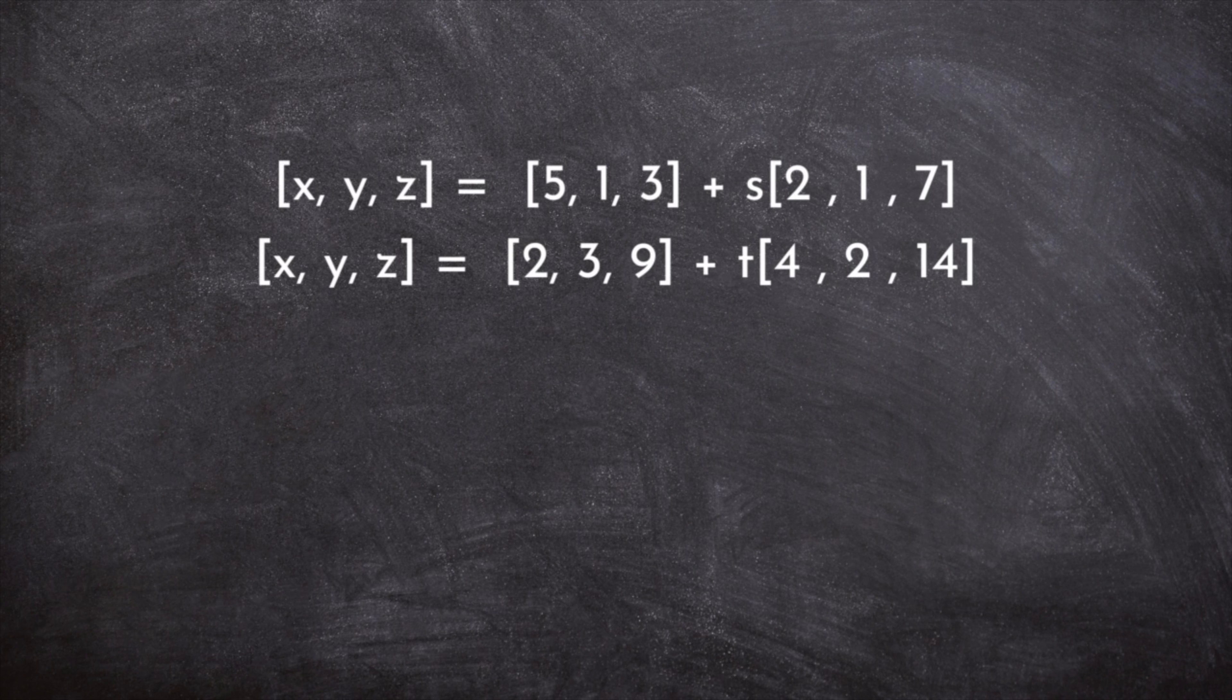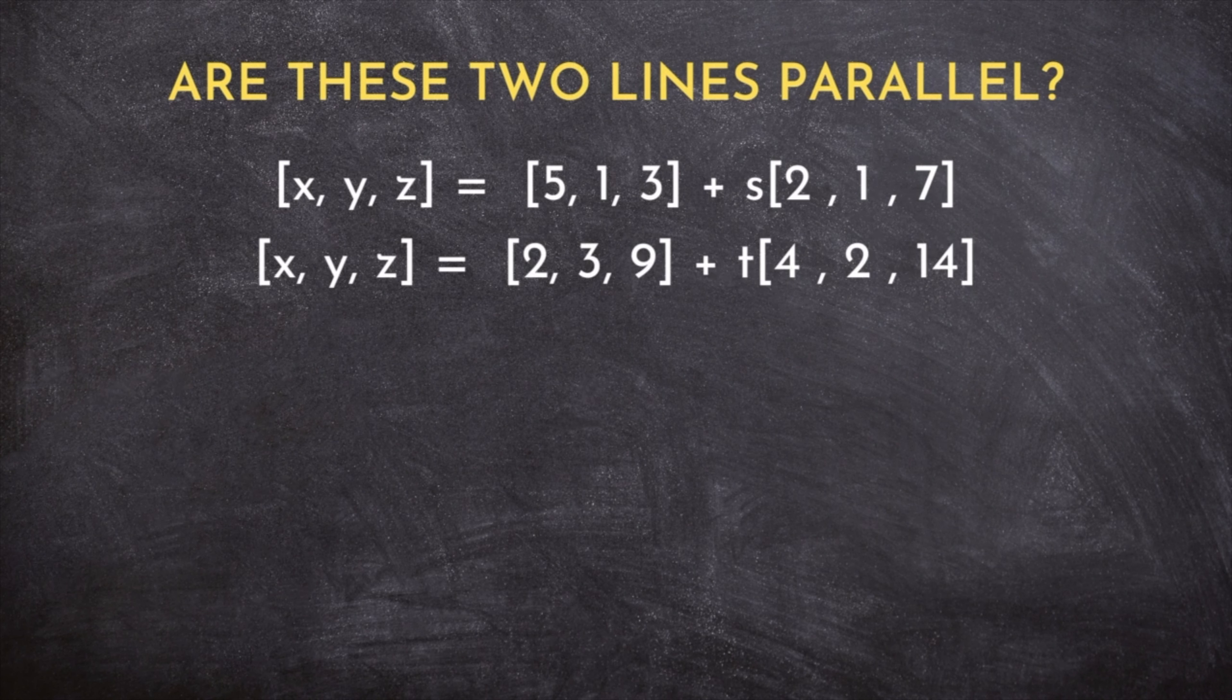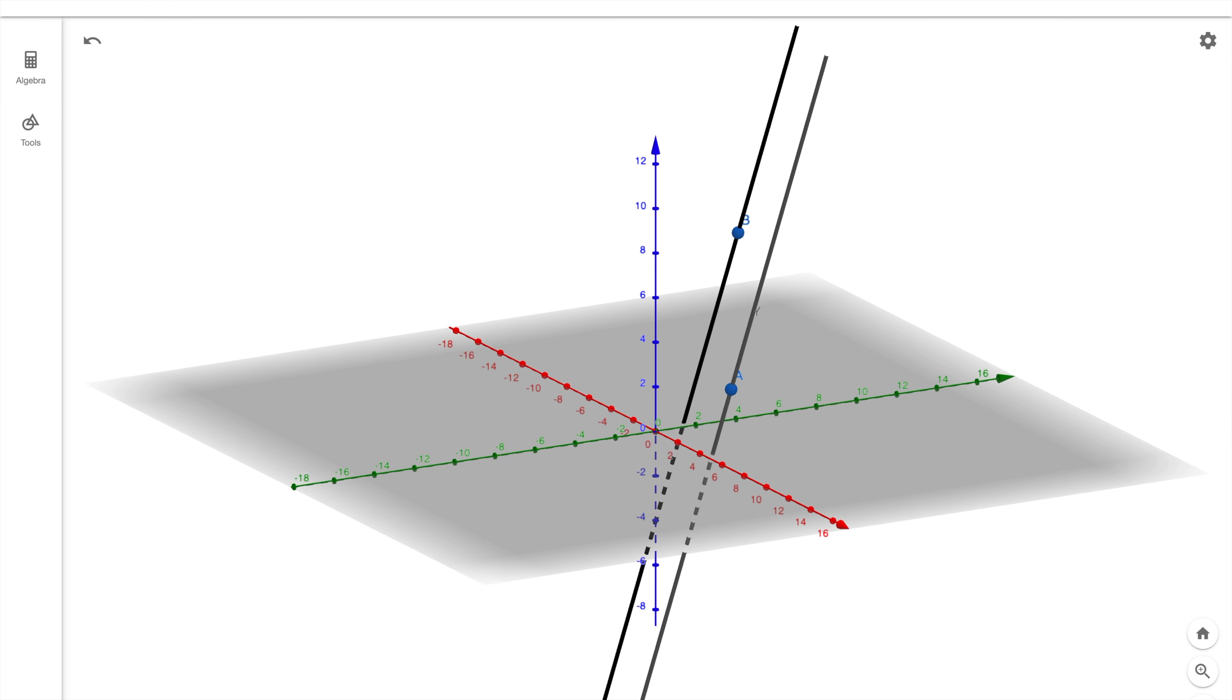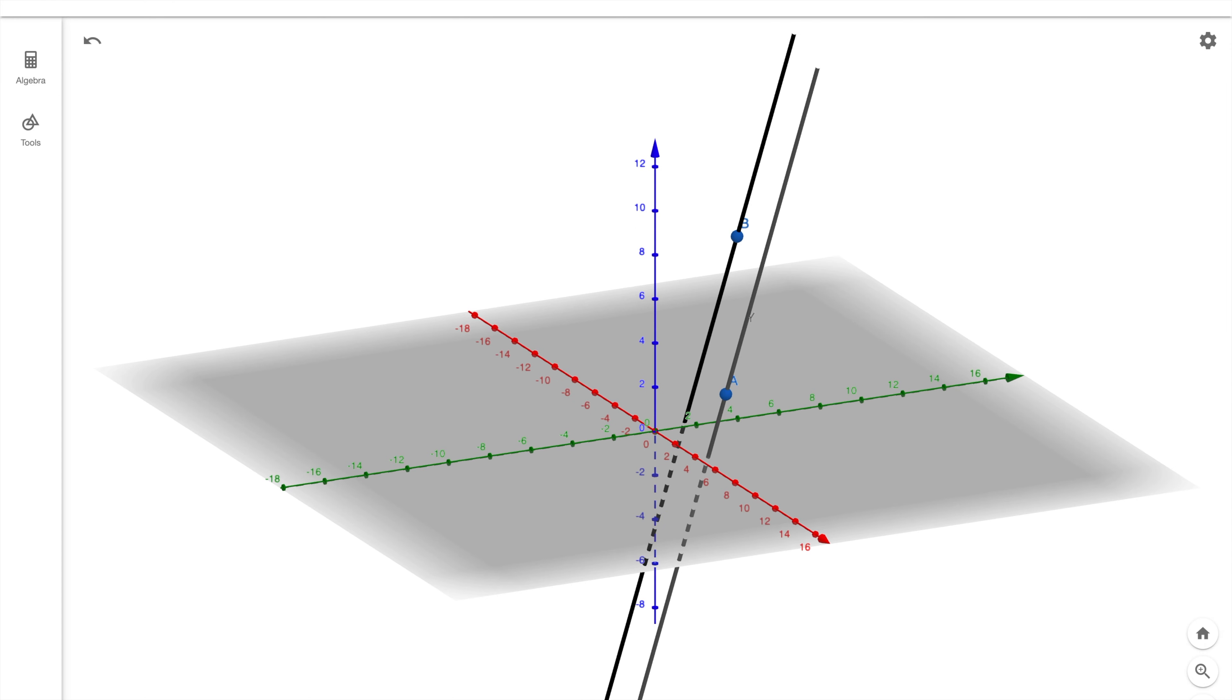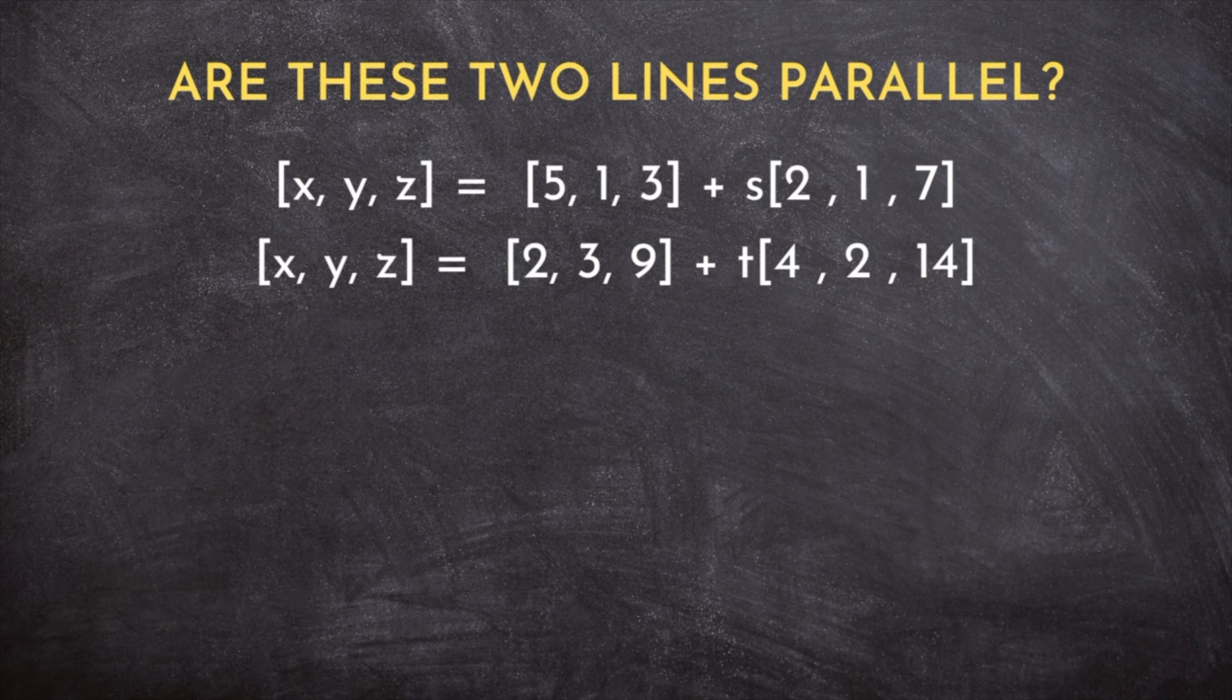Anytime I get a pair of lines and I want to know anything about how they intersect, the first thing I do is check if they are parallel. But how do we tell if two lines in three-dimensional space are parallel if we can't see them? Well, let's take a good, hard look at their direction vectors.